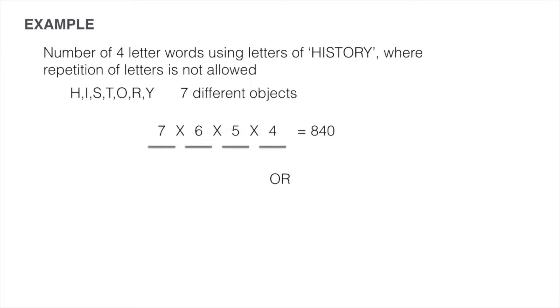Number of permutations is given by NPR which is 7P4 in this case. This equals 7 factorial divided by 7 minus 4 factorial which equals 7 factorial divided by 3 factorial. This expression when solved gives us again 840 as the result.